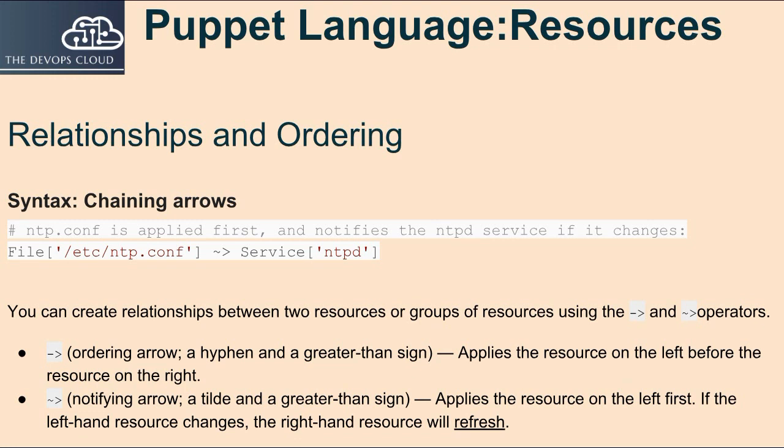The ordering arrow (hyphen and a greater than sign) applies the resource on the left before the resource on the right. The notifying arrow (tilde and a greater than sign) applies the resource on the left first; if the left-hand resource changes, the right-hand resource will refresh. For example with NTP, ntp.conf is applied first and notifies the NTPD service if it changes.